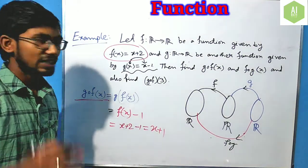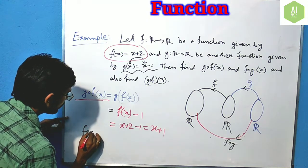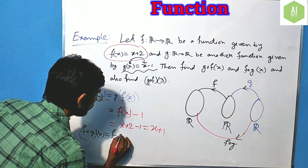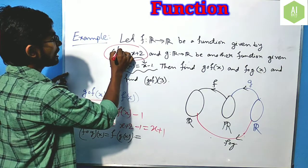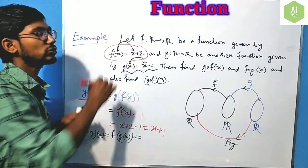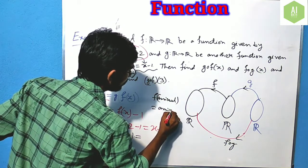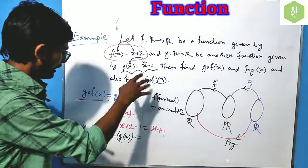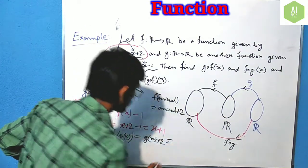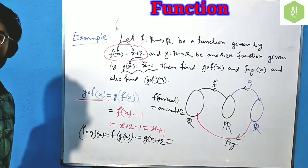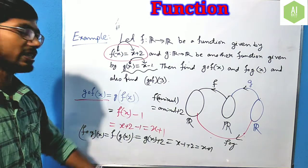Now let's find F compose G. F compose G of x equals F of G of x. For F, whatever is written inside the bracket, we multiply by 1 and add 2 — that is, we just add 2. So F of G(x) = G(x) + 2. Since G(x) = x − 1, we get F(G(x)) = (x − 1) + 2 = x + 1. Ultimately, G of F of x and F of G of x are both the same here.